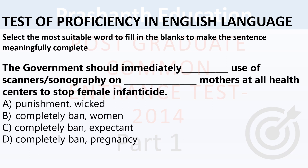Next question: The government should immediately ___ use of scanner on mothers at all health centers to stop female infanticide. The correct answer is D — completely ban. Completely ban use of scanner on pregnant mothers at all health centers.